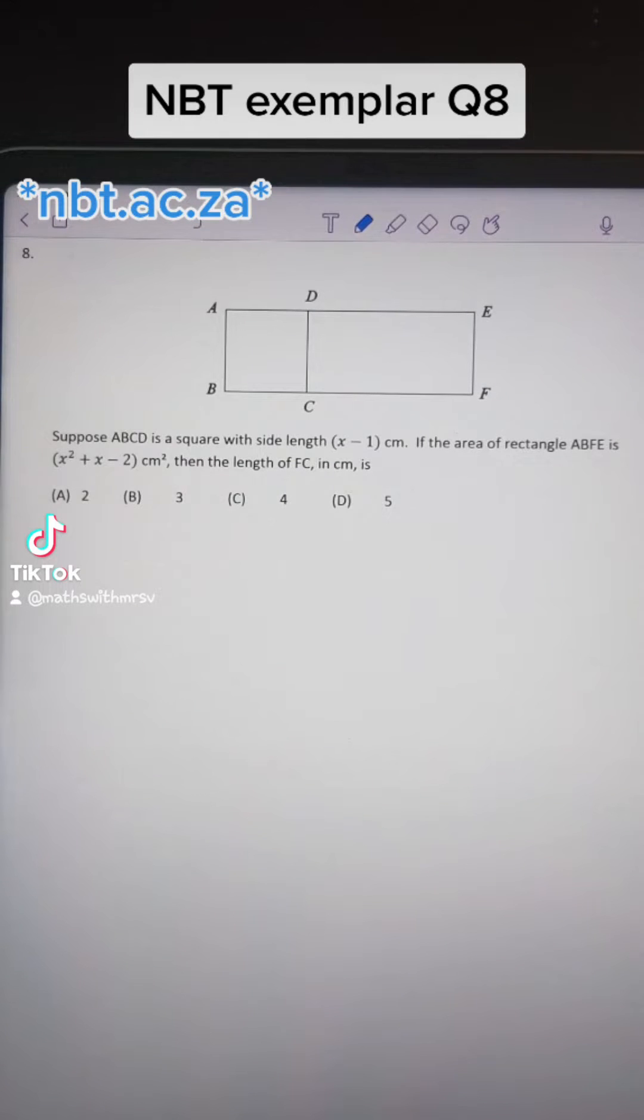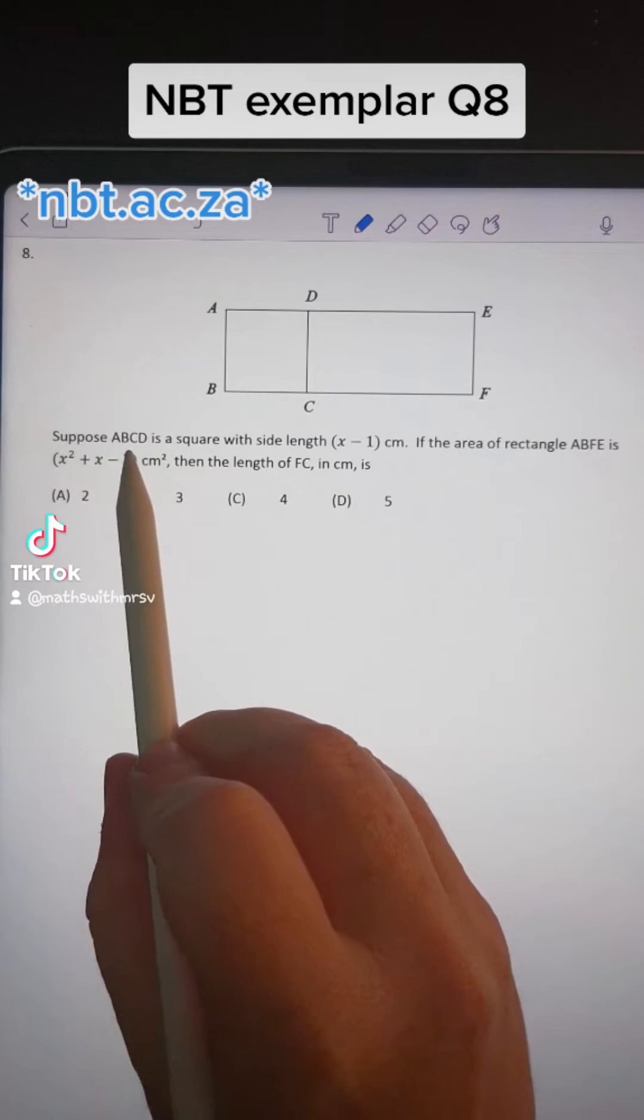This is question 8 of the NBT exemplar. It tells us that we have a square,